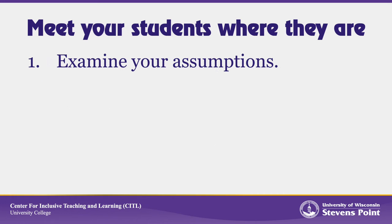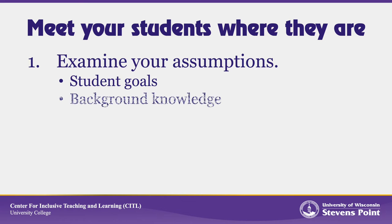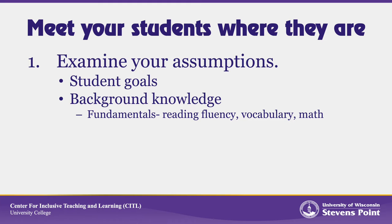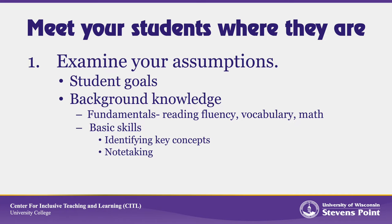Let's break down some of the ways that you can meet your students where they are, beginning with examination of your assumptions. Assumptions often go unacknowledged, and because of this, we're likely to be teaching well, but we're likely also to pitch our course to students who are different than the ones actually in the seats. Ask yourselves: why do you think your students are in your class, and are you sure? What background knowledge and skills do you expect your students to have? Think about the fundamentals — how fluent they are with reading, whether they have a decent vocabulary, whether they can write, and whether they have the math skills you expect. Think about basic study skills, like being able to identify key concepts, take notes, whether or not they know study strategies, or can cope with academic rigor. And now realize that because of the pandemic, for all of these things, your students are five to six months behind where they would normally be in their educational process. So it's likely that your assumptions are wrong.